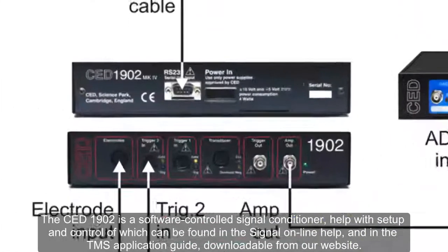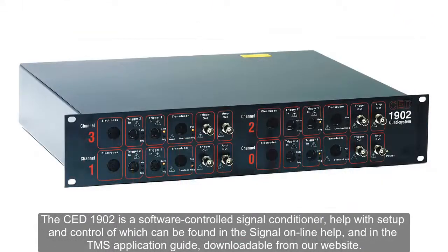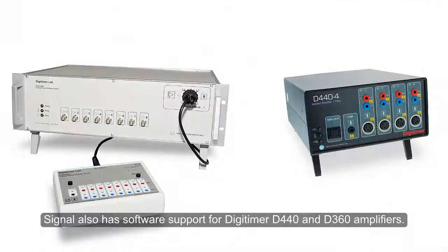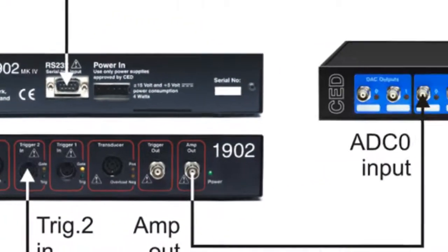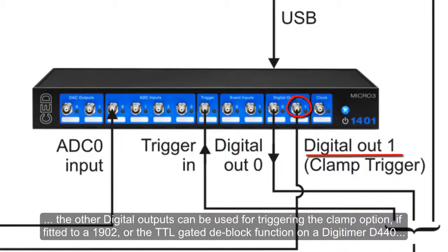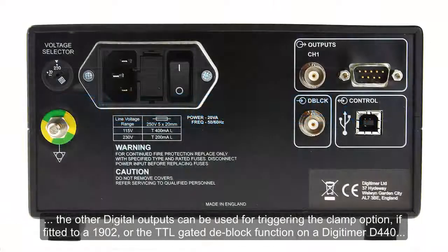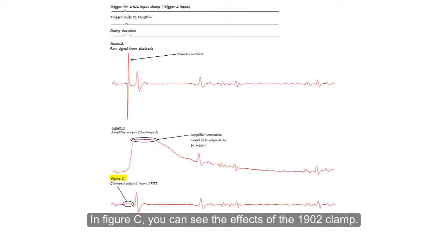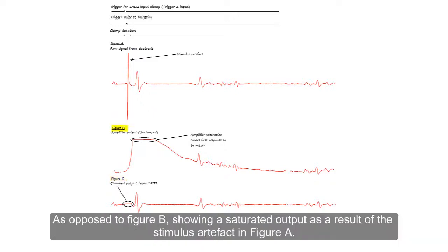The CED1902 is a software-controlled signal conditioner; help with setup and control can be found in the Signal online help and in the TMS application guide downloadable from our website. Signal also has software support for Digitimer D440 and D360 amplifiers. In addition to using digital output 0 to send TTL pulses to trigger the MagStim, the other digital outputs can be used for triggering the clamp option if fitted to a 1902, or the TTL gated D-block function on a Digitimer D440 for minimising the effects of stimulation artifacts and preventing amplifier saturation. In Figure C, you can see the effects of the 1902 clamp, as opposed to Figure B showing a saturated output as a result of the stimulus artifact in Figure A.